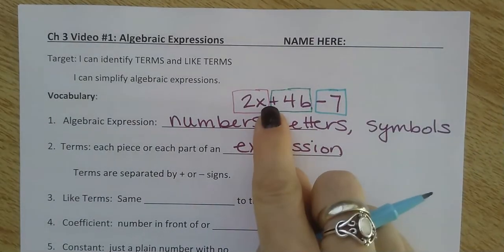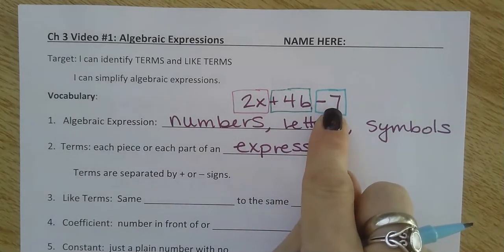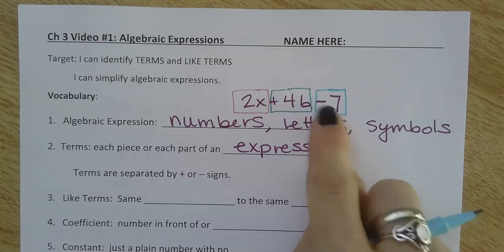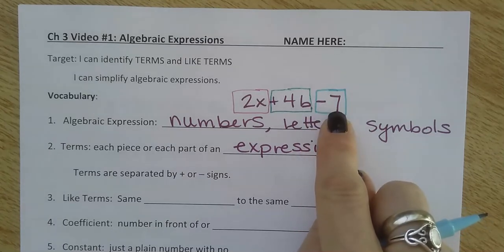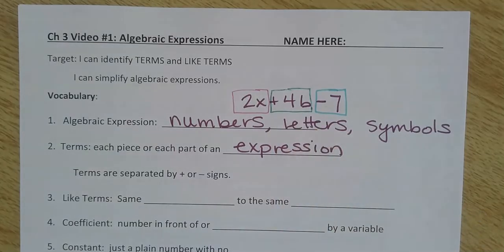If I look at where the plus and minus signs are, that separates my different terms. I want to make sure I include this negative with whatever comes after it. So that's a negative 7, that's a positive 4b.